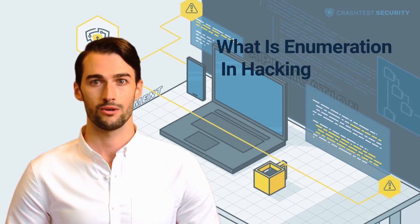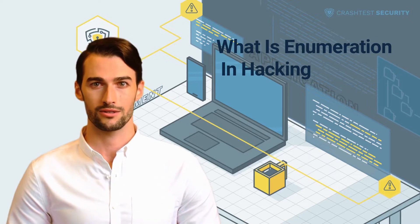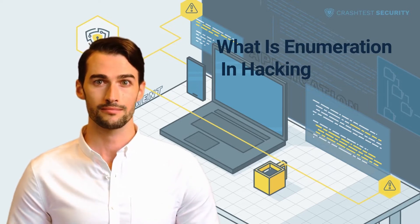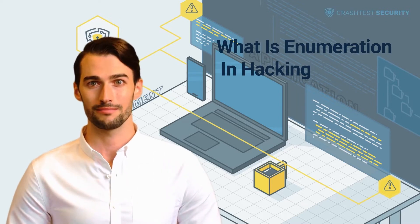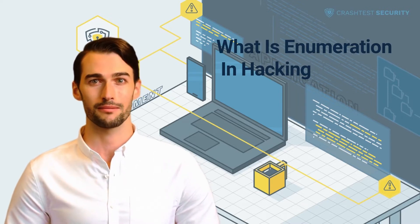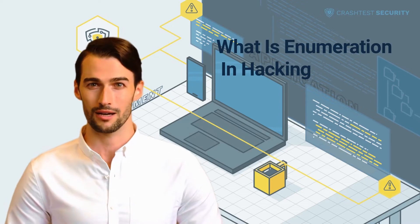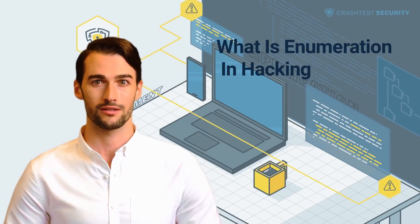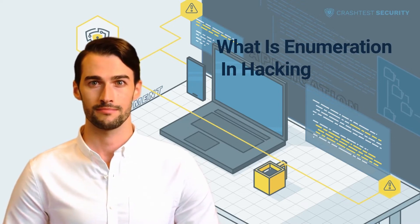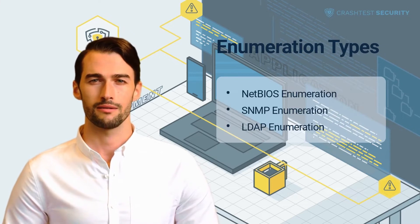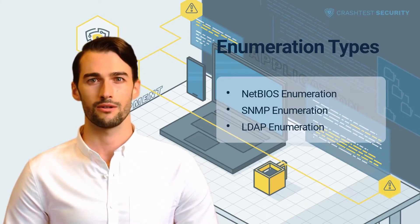Malicious actors also use penetration testing tools to gain pieces of information such as IP routing tables, hostnames, DNS details, SNMP information, users on database records, and network services and shares. Enumeration attacks are classified depending on the target system, its services, and its host information.